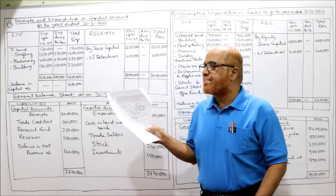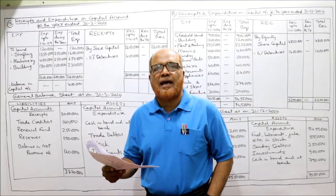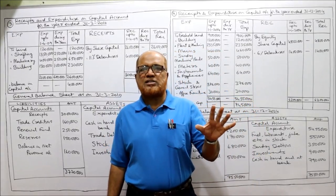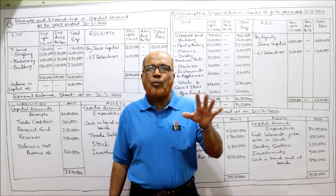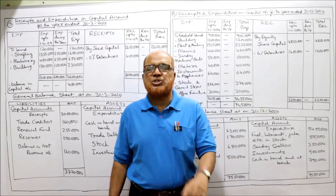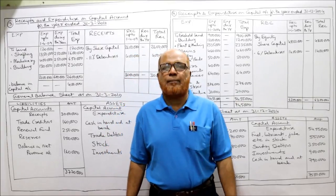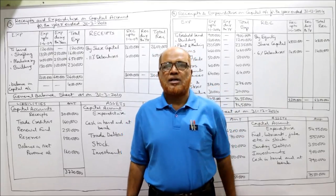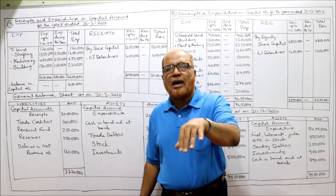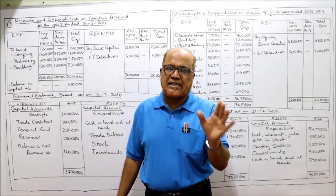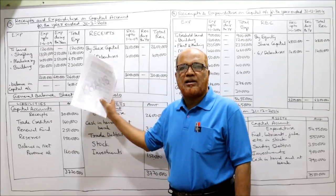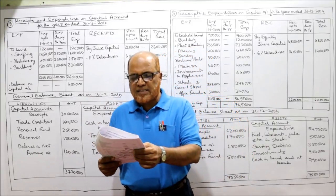Starting the third problem: from the following particulars, draw a capital account and general balance sheet as on 31st March 2010 under the double account system. Electricity companies are public utility concerns which follow the double account system. Double account system means not one balance sheet but two balance sheets will be prepared. The first part is called the capital account or receipts and expenditure on capital account.